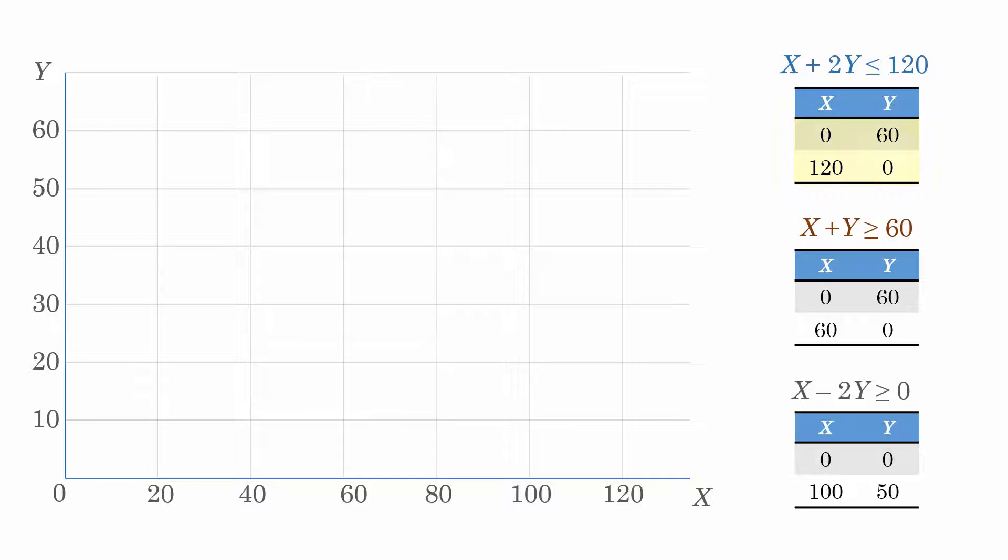For the first constraint, we have 0, 60 and 120, 0. We join the points for the constraint line. For the second, we have 0, 60 and 60, 0. And that's the line. For the third constraint, we have a point at 0, 0 and another at 100, 50. And that's the line in gray.